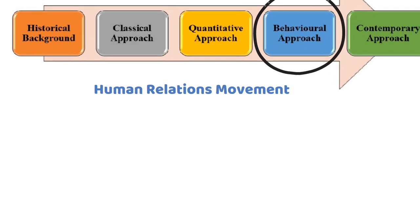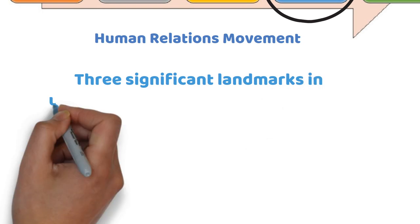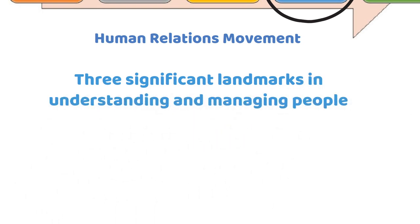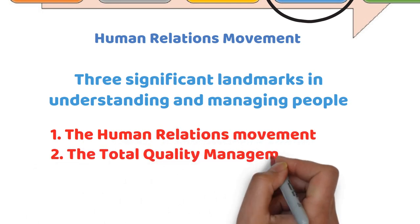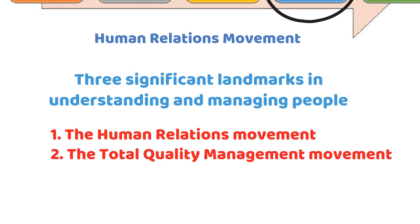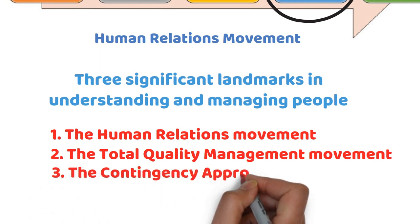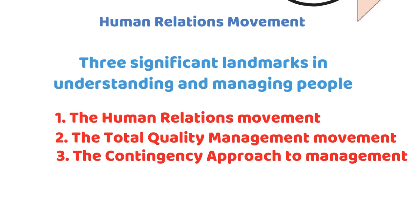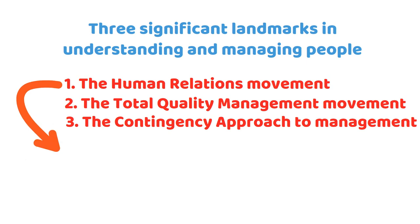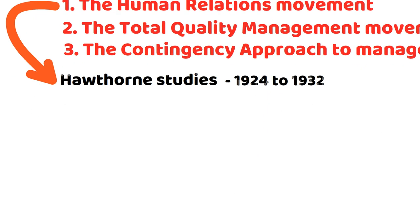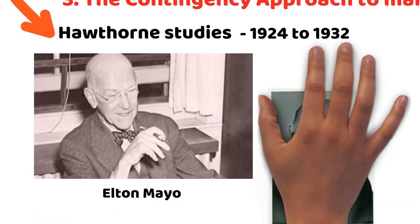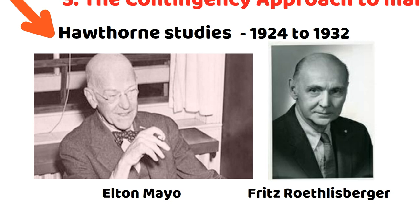Three significant landmarks in the evolution of understanding and managing people were the human relations movement, the total quality management movement, and the contingency approach to management. The human relations movement was born from the Hawthorne studies, which were conducted from 1924 to 1932. Elton Mayo and Fritz Roethlisberger summarized it.